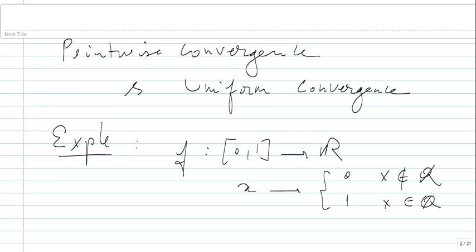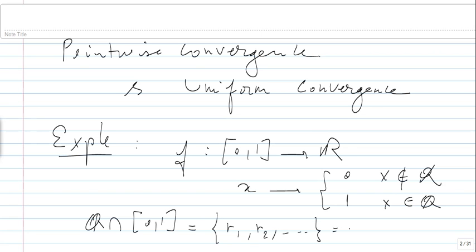But what's interesting is that this function can be approximated by a sequence of functions in the sense of pointwise convergence. Indeed, if you take ℚ ∩ [0,1], we know this set is infinite and countable. Let's call its elements r₁, r₂, etc. So this is your rₙ, for n greater or equal than 1.